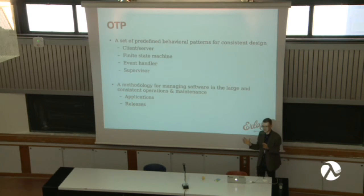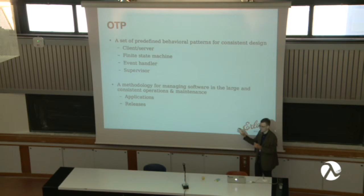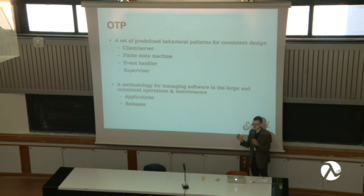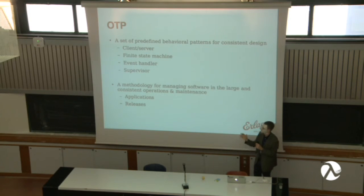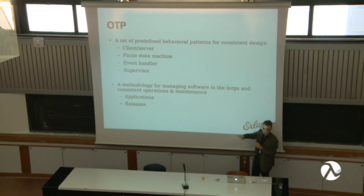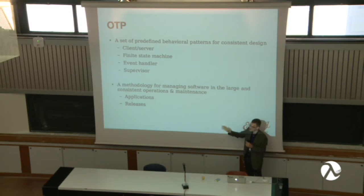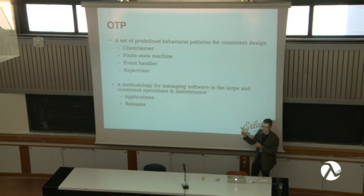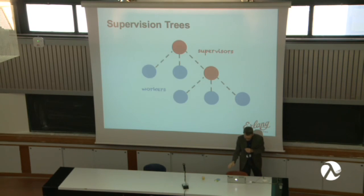OTP is also a methodology for managing software at large with consistent operations and maintenance. An application is a fixed structure — not 'where do I put config, do I keep it in JSON, how do I distribute it.' There are fixed ways of configuring it and its dependencies. If you stick with what OTP gives you, you're interoperable across the ecosystem. Releases are a package you drop and run, and you can do hot code load on releases — a type of black magic almost no one does these days.